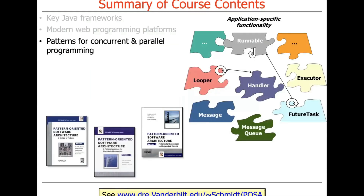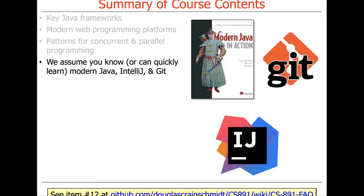We're going to be touching on patterns for concurrent and parallel programming throughout the course. I've done lots of work for decades in the area of software patterns, so you'll get a chance to learn from that. There are a couple of assumptions baked in here — I assume that you either know or can very quickly learn modern Java. The modern Java I expect you to know or learn primarily covers Java functional programming: things like lambda expressions, method references, and functional interfaces. These are things I covered in my previous semester. If you need a refresher, take a look at item number 12 in the frequently asked questions page in my GitHub repository for the CS891 course.